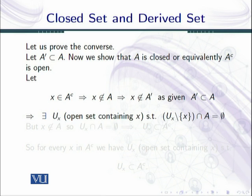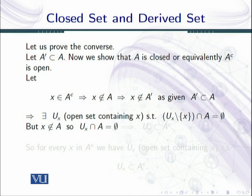Agar yeh aapke paas limit point nahi hai to it means wahan pe at least ek aisa open set containing X hoga jo A ke saath intersect nahi karega. It means that there exists at least one open set U_x such that U_x minus x, intersection with A, is empty. But X is not an element of A, that is, X does not belong to A.